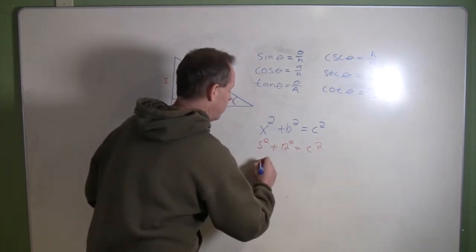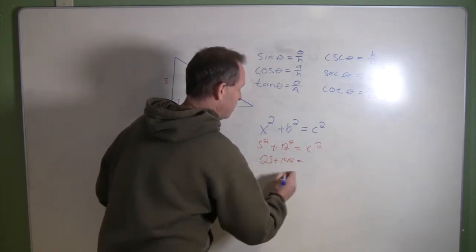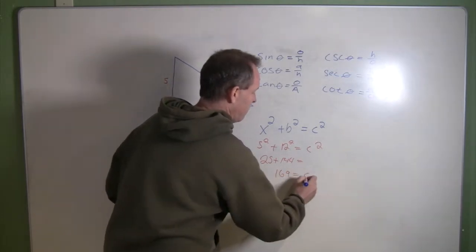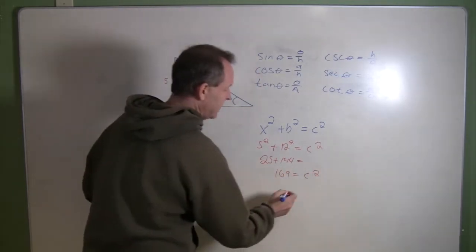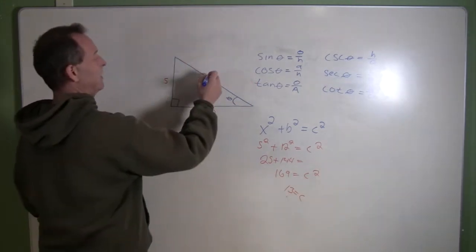So what is that? That's 25 plus 144, that equals 169. Take the square root of both sides, and it looks like that third side is length 13.